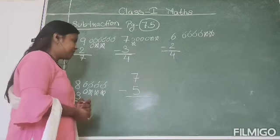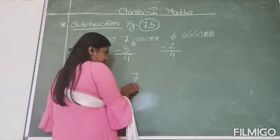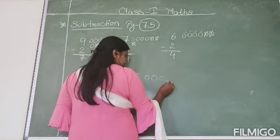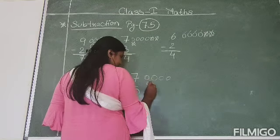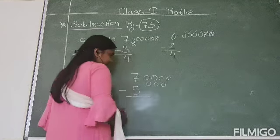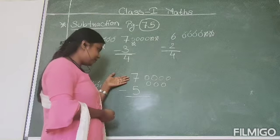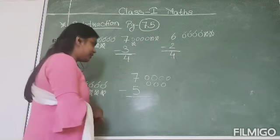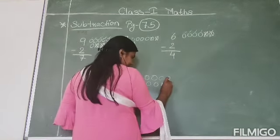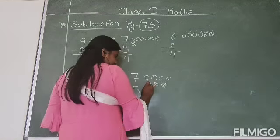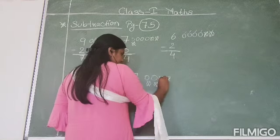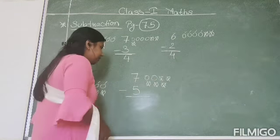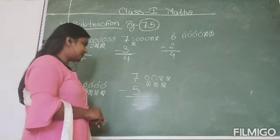Now the last one. This number is 7. So let's draw 7 circles — one, two, three, four, five, six, seven. We have drawn 7 circles according to the first number. Now we will cut down circles according to the second number. The second number is 5, so we will cut down 5 circles — one, two, three, four, five. Now count the remaining circles — one and two. Only 2 circles have remained. So your answer is 2.